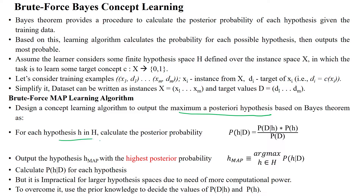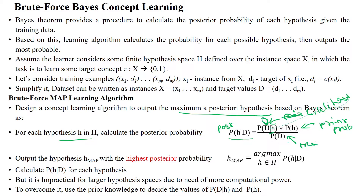From the finite hypothesis space H, we calculate the posterior probability P(H|D). This is the prior probability P(H), the likelihood P(D|H), and the marginal probability P(D). The output hypothesis will be considered as the one with the highest posterior probability.